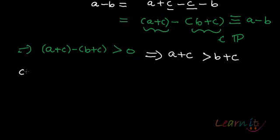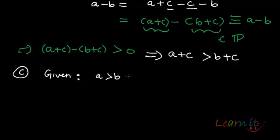Now we will do the third part. In the third part, we were talking about products — what happens if A is greater than B and there is a C which is greater than 0. Then if we multiply C to both sides, the order still remains, and the order is opposite if C is less than 0. Given: A is greater than B and C is greater than 0. We need to prove that AC is greater than BC.